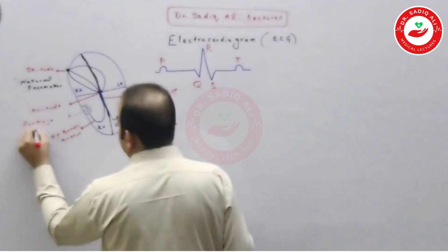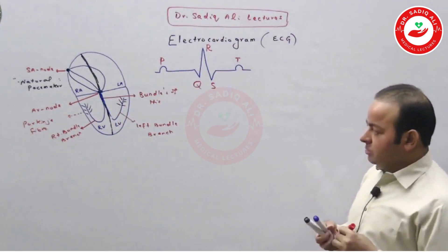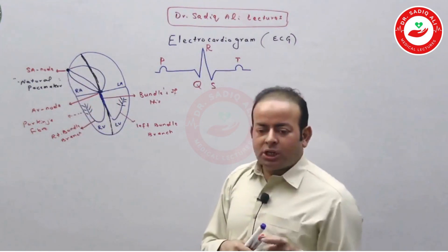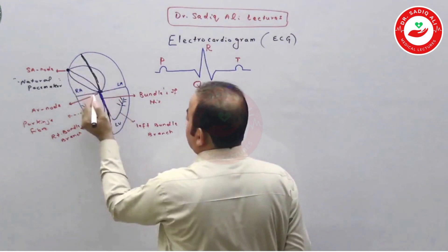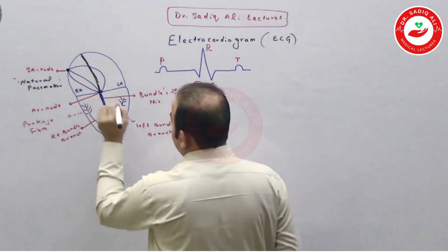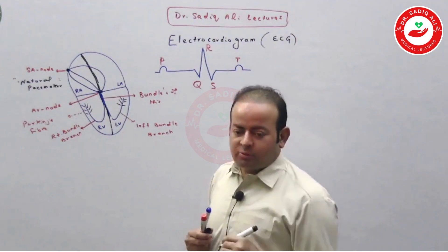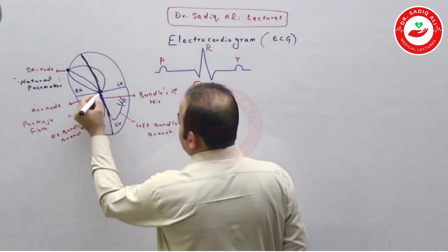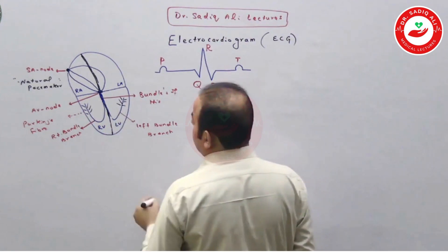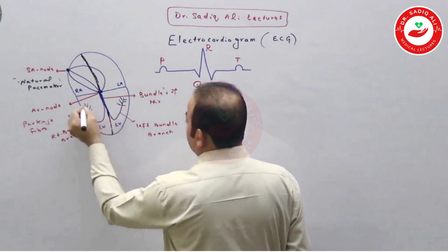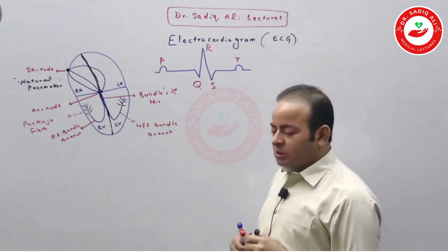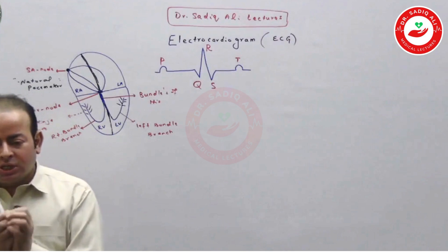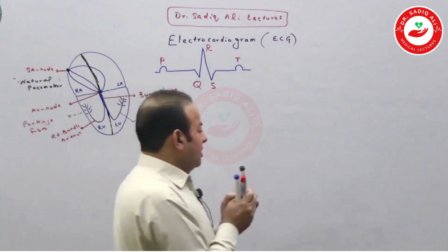So to summarize: the impulse starts from the SA node, travels through internodal pathways via both atria to reach the AV node, then goes to the bundle of His, right and left bundle branches, and finally reaches the Purkinje fibers. This whole process — from SA node firing to reaching the Purkinje fibers — is called the conducting system of the heart.